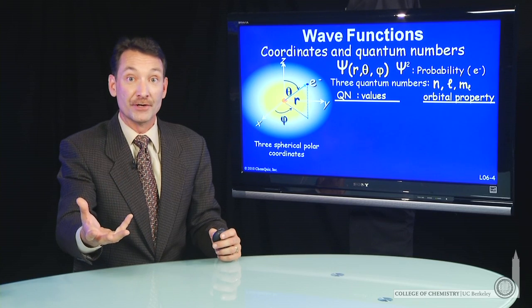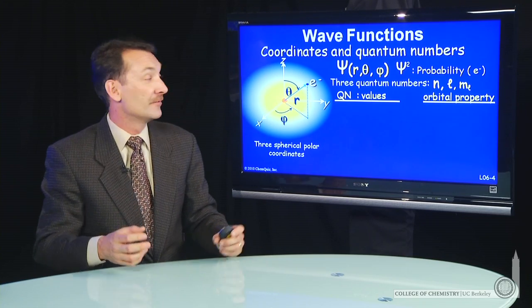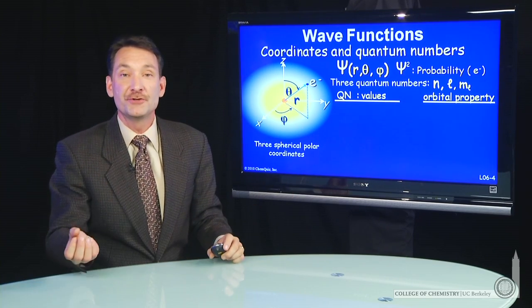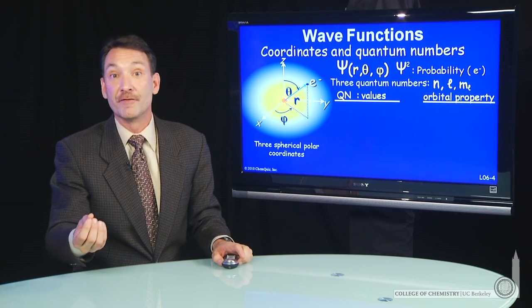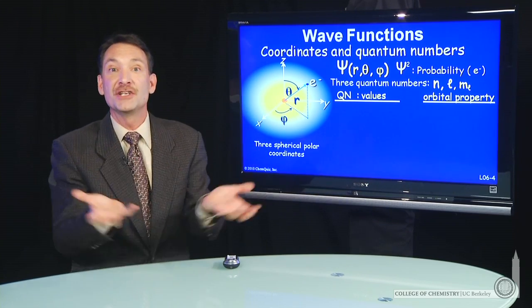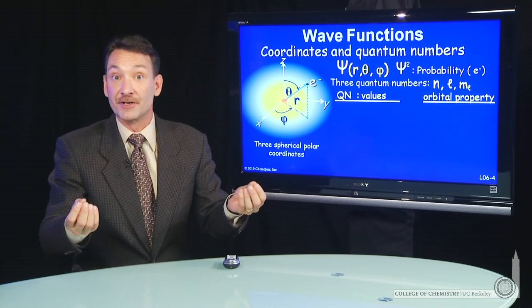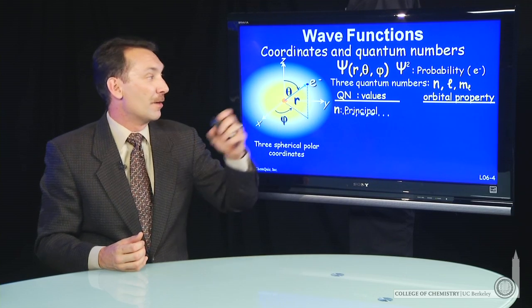Let's look at those quantum numbers and how they relate to the properties of the wave function. So we'll look at the quantum number values and the orbital property. Now, I'm going to start to use the term orbital. What I mean is wave function or square of the wave function. The orbital is the region in space where the electron can exist. So that's what the wave function describes. I'll use those two terms interchangeably.